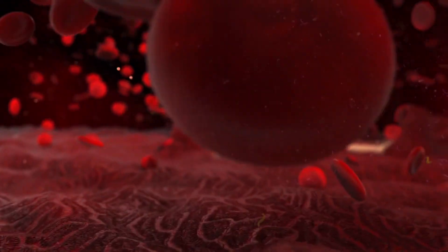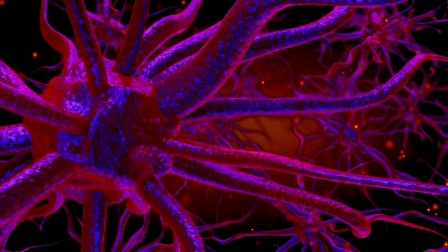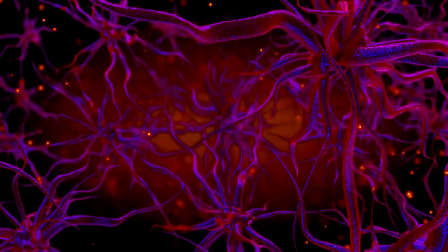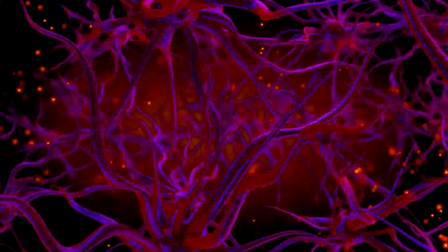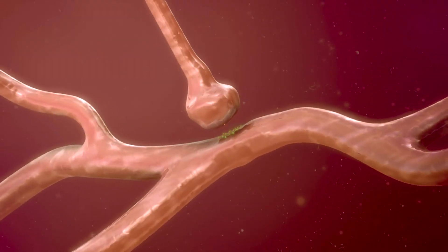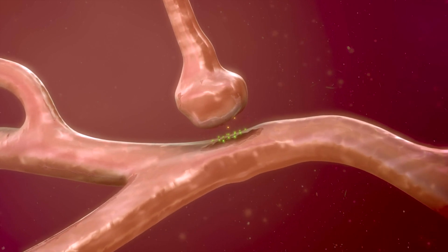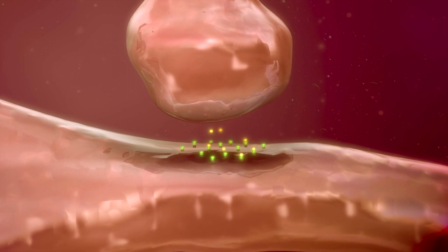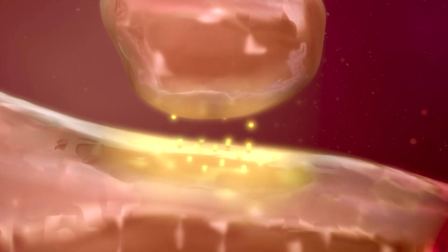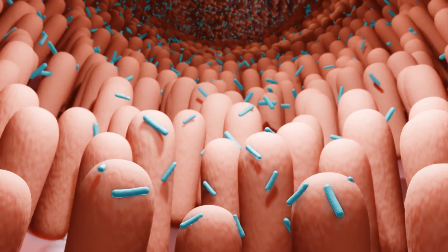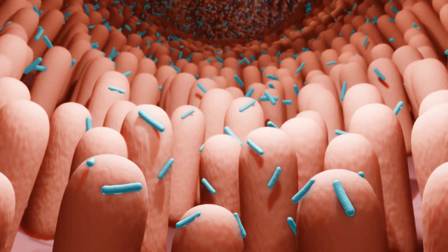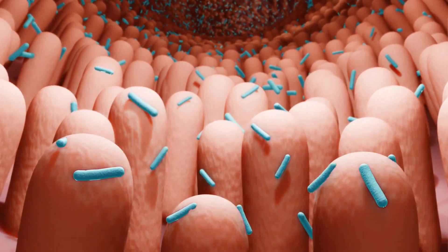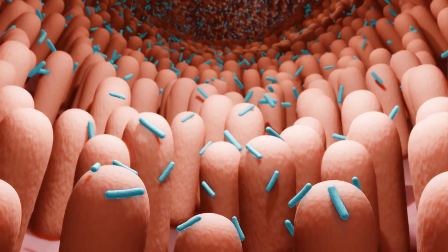Gut microbes, the microscopic messengers. The stars of the neurotransmitter telephone are the gut microbes, the diverse and bustling community of microorganisms residing in our gut. These tiny but influential beings produce and interact with an impressive array of neurotransmitters such as serotonin, dopamine, and gamma-aminobutyric acid, GABA. As the master communicators, gut microbes generate these neurotransmitters by breaking down dietary components, impacting the production and regulation of these brain-signaling chemicals.